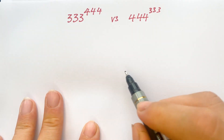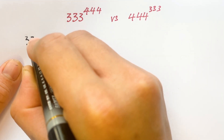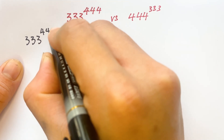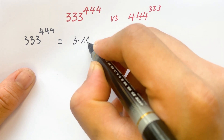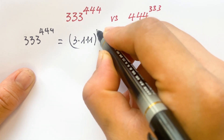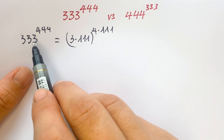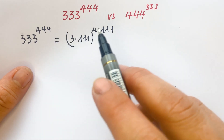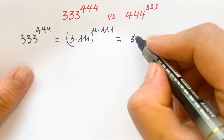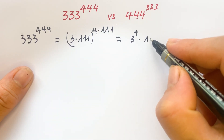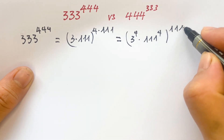everyone can write for the first exponent. You can write 333 to the power 444 equals 3 times 111, to the power 4 times 111. You need to break down 333 equals 3 times 111, and 444 is the same. So you can see that equals 3 to the power 4, times 111 to the power 4, whole to the power 111.